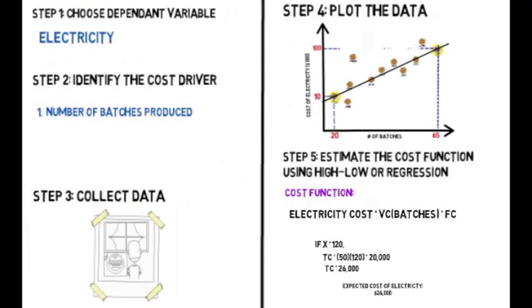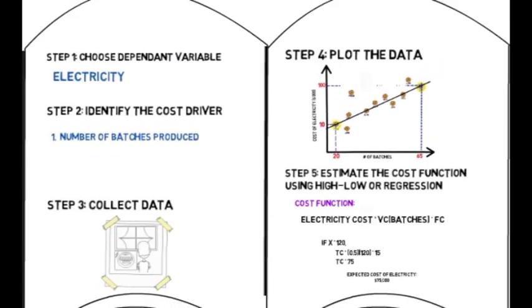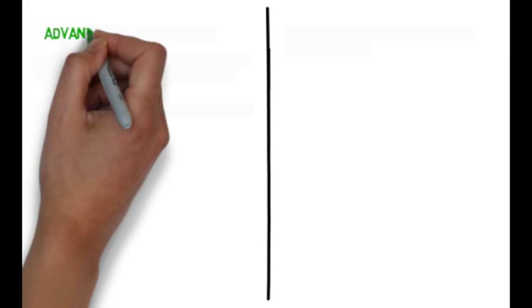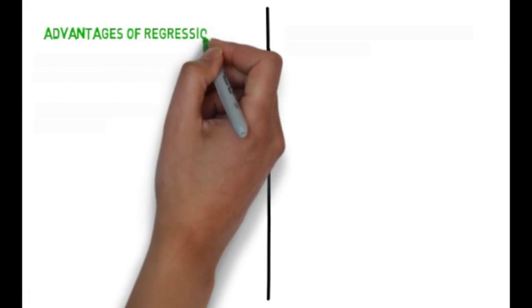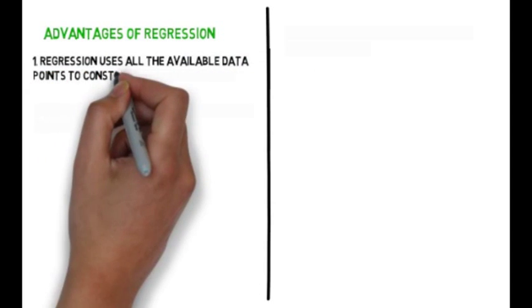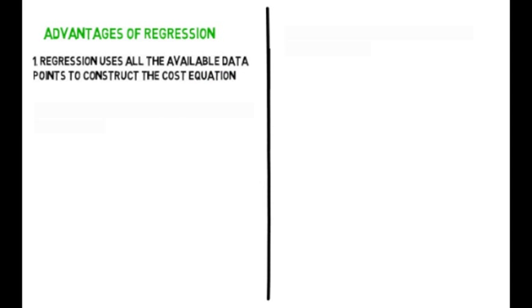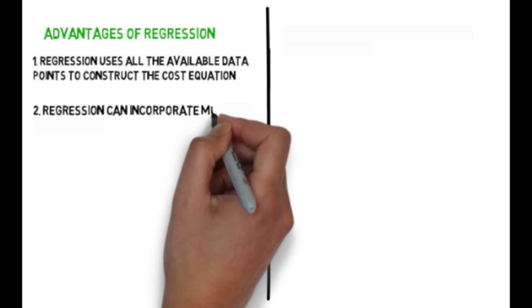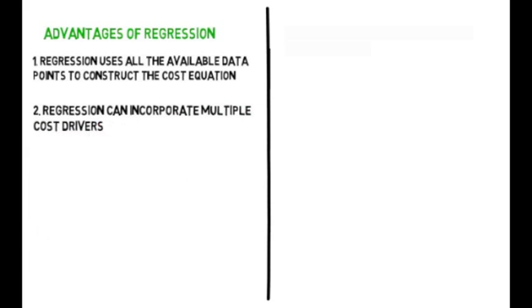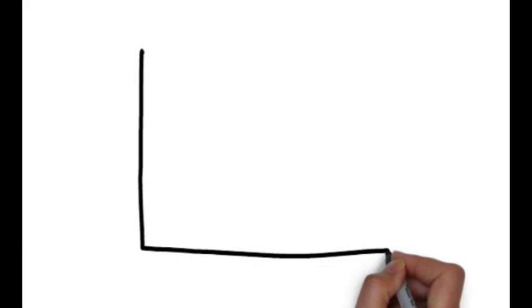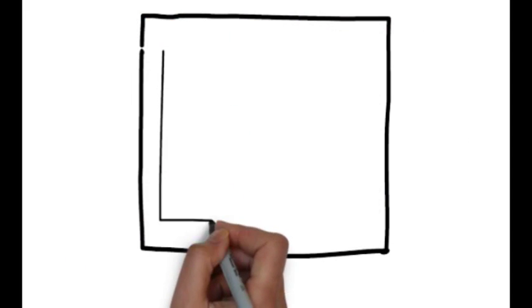Bob wants a more accurate model. He thinks the estimates are too low and there may be other factors that cause electricity costs, so Bob uses regression to calculate a new cost model for electricity. Unlike the high-low method, which uses just two data points, regression uses all available data points to construct the cost equation. Regression can also incorporate multiple cost drivers, as many costs are not driven by just a single factor. Bob adds hours of operation into his analysis, as more hours mean greater use of lights and air conditioning in the bakery.